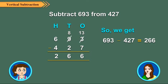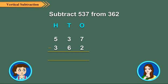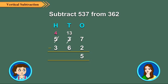Now, let us take an example and see how we regroup 100's to 10's. Let us find 537 minus 362. Write the numbers in columns and subtract 1's from 1's. 7 1's minus 2 1's is equal to 5 1's. Regroup 5 100's and 3 10's as 4 100's and 13 10's.